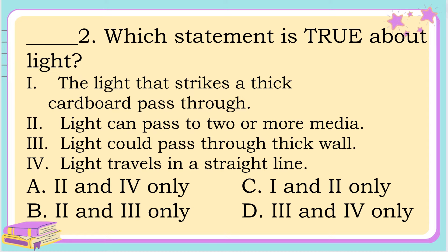Number 2. Which statement is true about light? A. Light can pass through two or more media, and light travels in a straight line. B. Light can pass through two or more media, and light could pass through thick wall. C. The light that strikes a thick cardboard passes through, and light can pass through two or more media. Or D. Light could pass through thick wall, and light travels in a straight line. The answer is letter A.